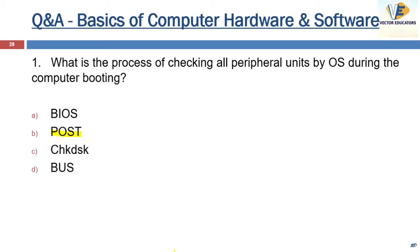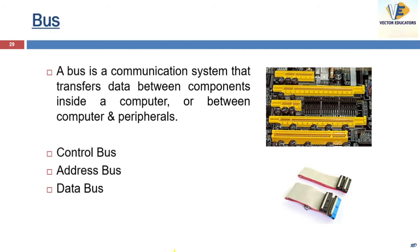BIOS we have already studied in the last lecture under ROM. Check disk is a Windows utility to check the integrity of the hard disk and fix file system errors. Bus is a communication system that transfers data between components inside a computer or between the computer and peripherals. There are three types of buses: the control bus, address bus, and data bus. The control bus is unidirectional, while the address bus and data bus are bidirectional.